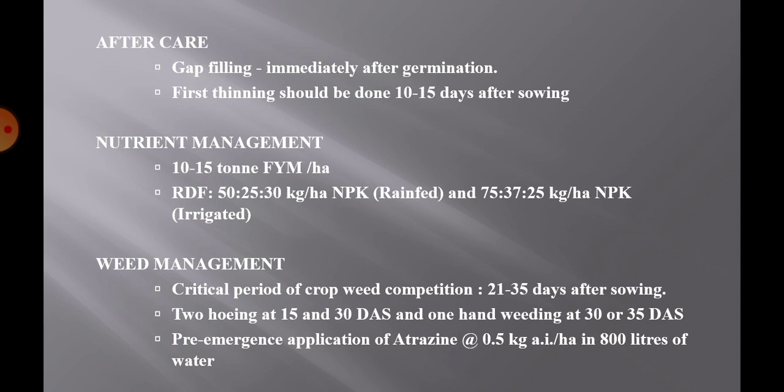Weed infestation is severe during the initial stages, up to 5 weeks after sowing. The critical period of crop-weed competition is 21 to 35 days after sowing. Keep the field free from weeds during this period by doing two hoeings at 15 and 30 days after sowing and one hand weeding at 30 to 35 days after sowing. For herbicide application, pre-emergence application of atrazine at 0.5 kg active ingredient per hectare in 800 liters of water gives effective weed control.